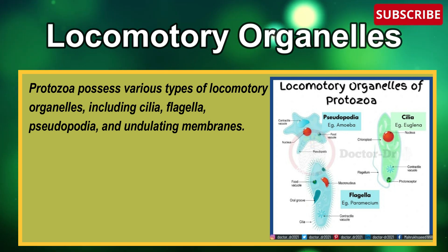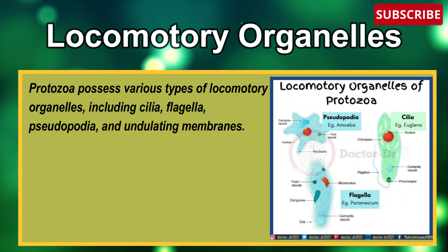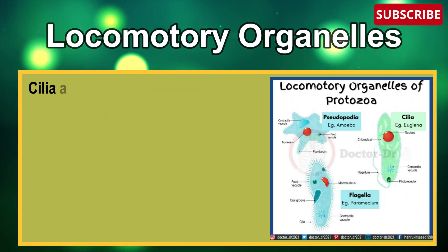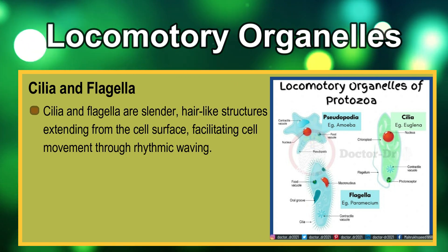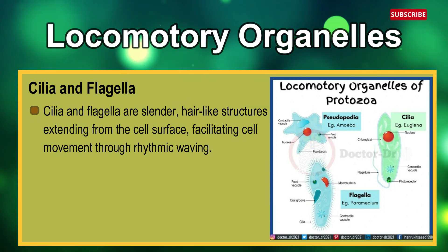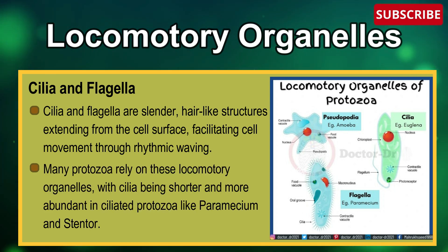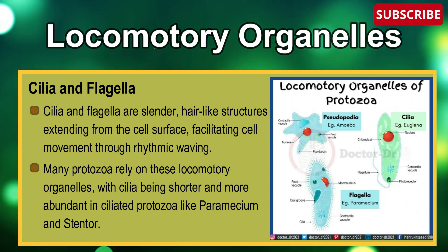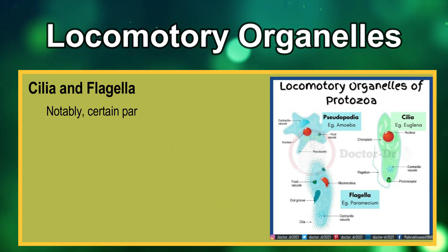Next: locomotory organelles of protozoa. Protozoa possess various types of locomotory organelles including cilia, flagella, pseudopodia, and undulating membranes. Cilia and flagella are slender, hair-like structures extending from the cell's surface, facilitating cell movement through rhythmic waving. Many protozoa rely on these locomotory organelles, with cilia being shorter and more abundant in ciliated protozoa like Paramecium and Stentor.